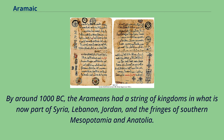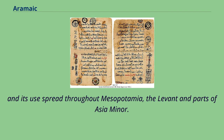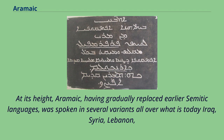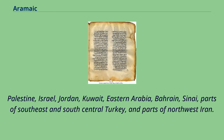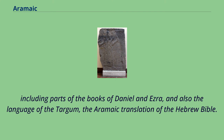Aramaic rose to prominence under the Neo-Assyrian Empire, under whose influence it became a prestige language after being adopted as a lingua franca of the empire. Its use spread throughout Mesopotamia, the Levant, and parts of Asia Minor. At its height, Aramaic was spoken in several variants all over what is today Iraq, Syria, Lebanon, Palestine, Israel, Jordan, Kuwait, Eastern Arabia, Bahrain, Sinai, parts of southeast and south-central Turkey, and parts of northwest Iran. Aramaic was the language of Jesus, who spoke the Galilean dialect during his public ministry, as well as the language of several sections of the Hebrew Bible, including parts of Daniel and Ezra, and the Targum, the Aramaic translation of the Hebrew Bible.